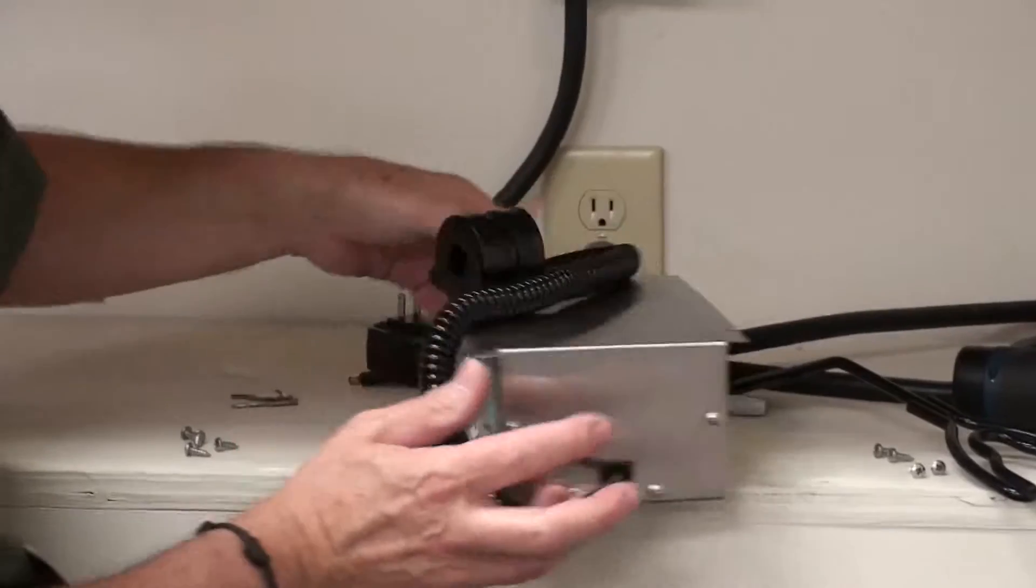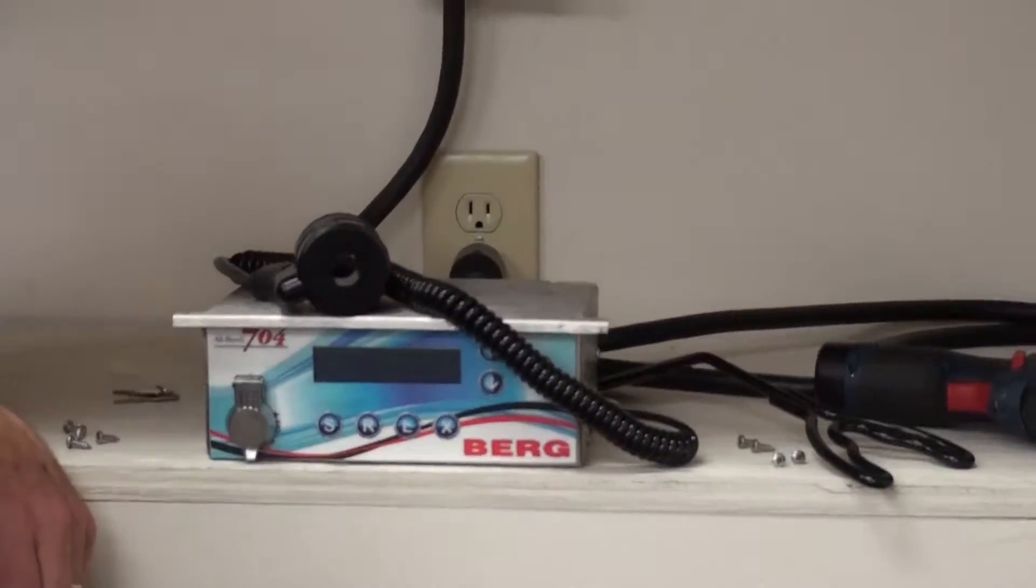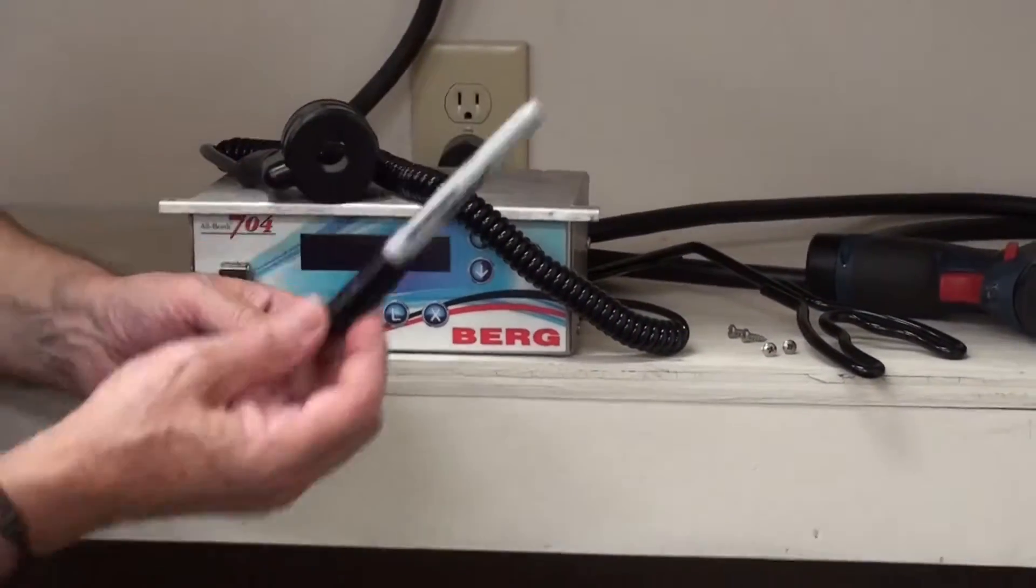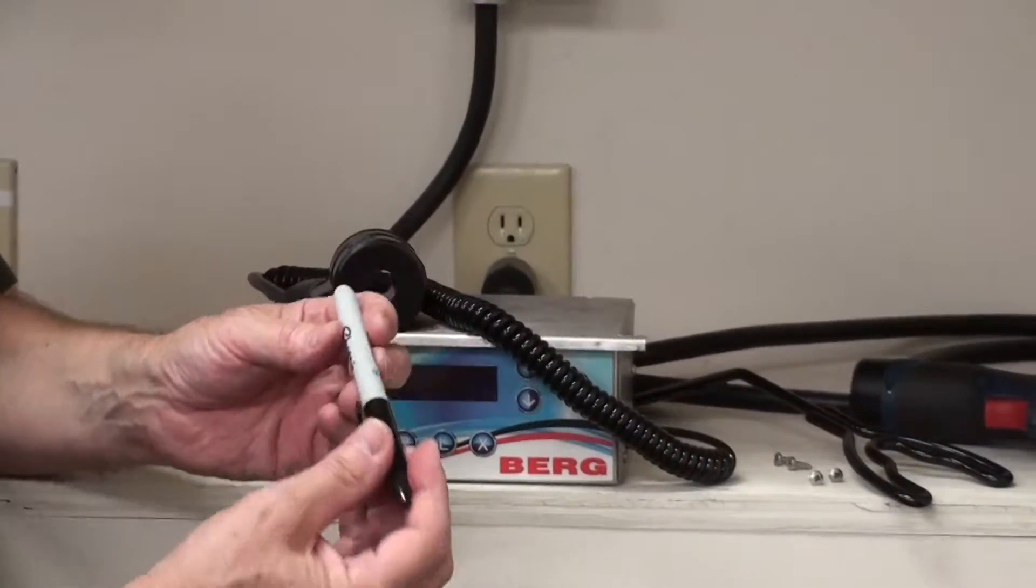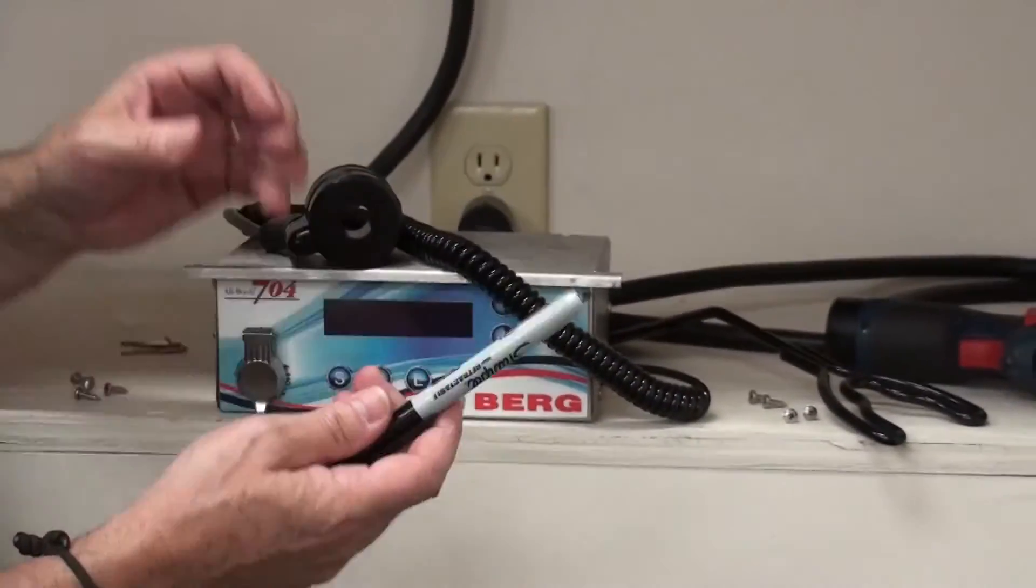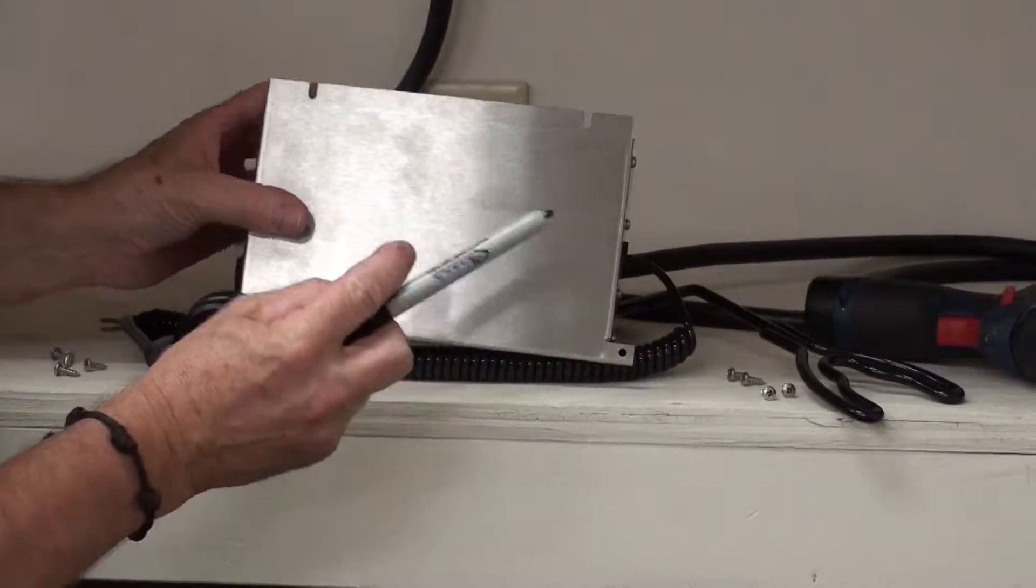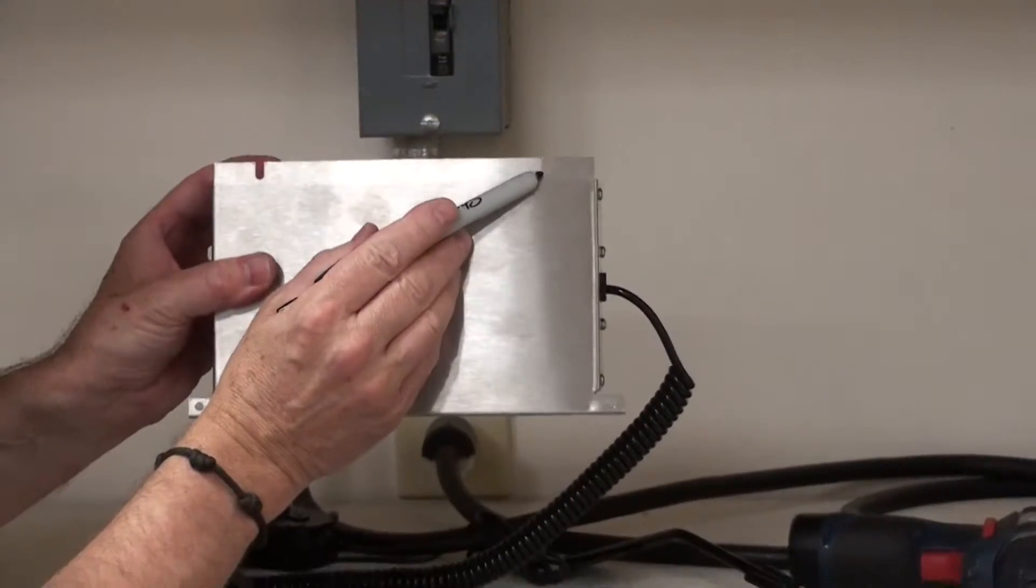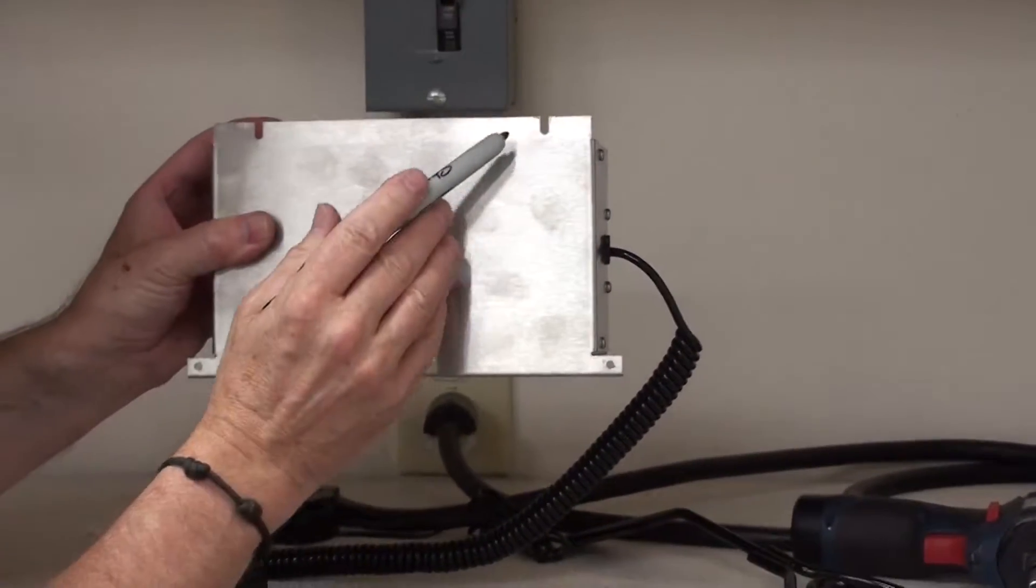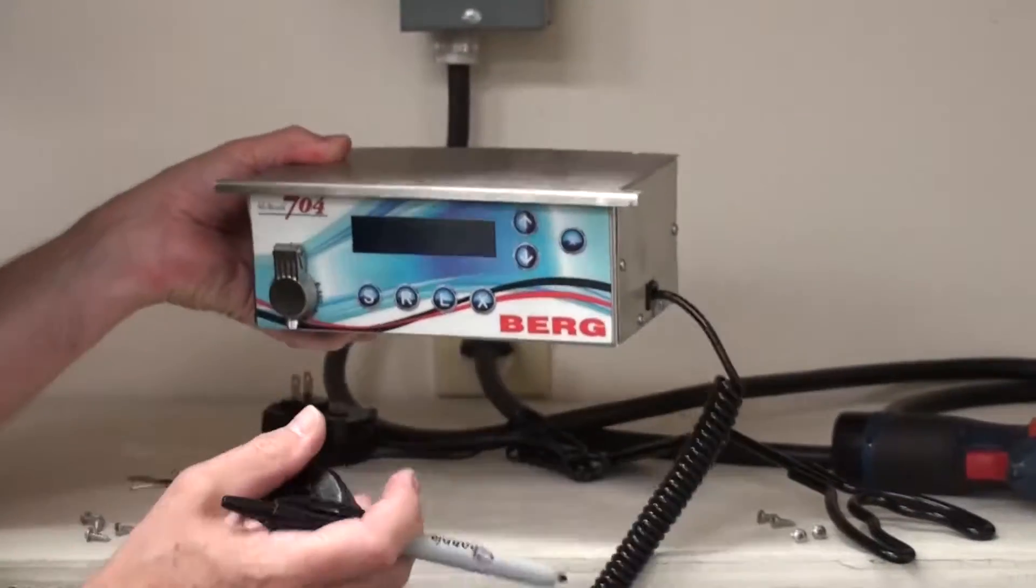So Ron, what tools did you bring with you to mount your Berg All Bottle 704? Well, the first thing I brought was just a marker. You can use anything. I've got this Sharpie retractable felt tip marker and I'll use that to mark the location for the screws that will be put into the wood and that these tabs will slide over. That will be the beginning of mounting this All Bottle 704.